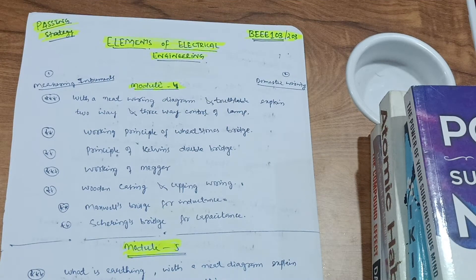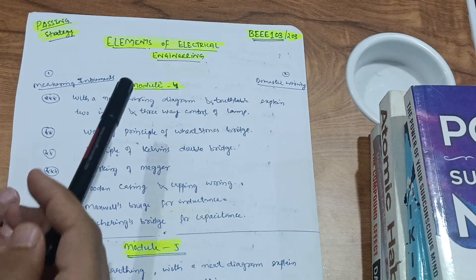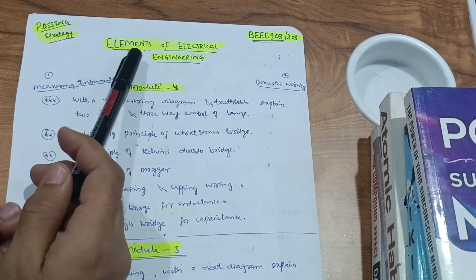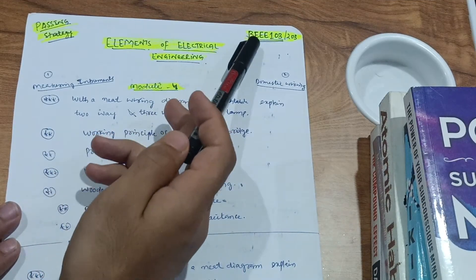Hello friends, welcome back again. My dear friends, today I am with another video of the passing strategy series. This is for the Elements of Electrical Engineering where the subject code is B Triple E 103 and 203.